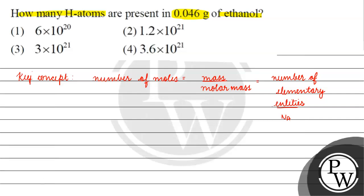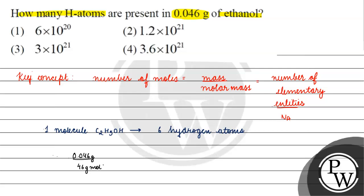Now, we have been given the mass. Mass divided by molar mass — how much will the molar mass be? 46 gram per mole.